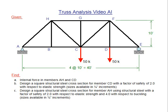Welcome to the third and final video for truss analysis problem that we see depicted here. In this particular video we will be solving part C, designing a square structural steel cross-section for member AH.